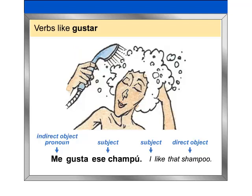In this diagram, observe how in the Spanish sentence the object being liked, ese champú, is really the subject of the sentence. The person who likes the object is the indirect object because it answers the question: to whom is the champú pleasing?